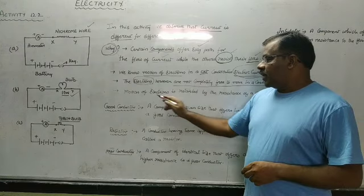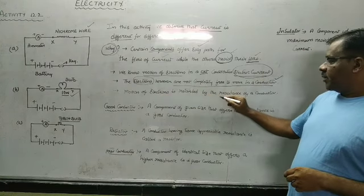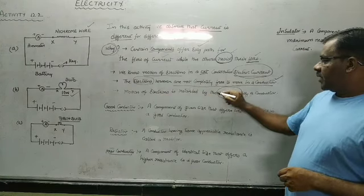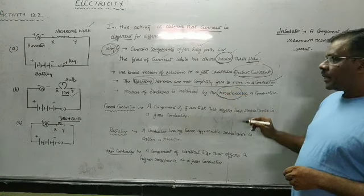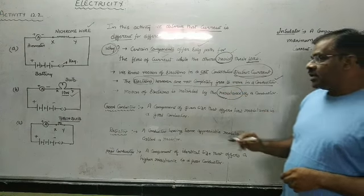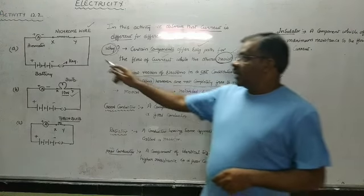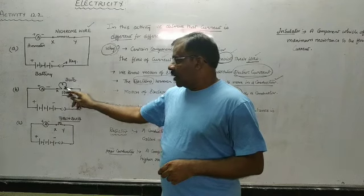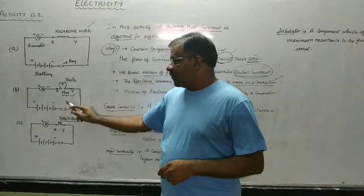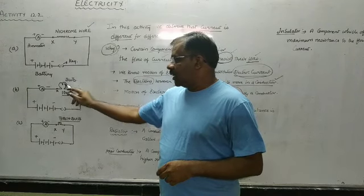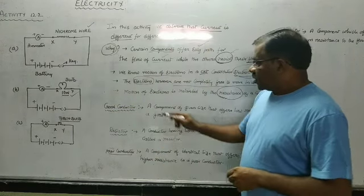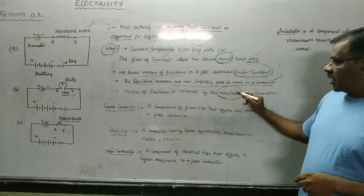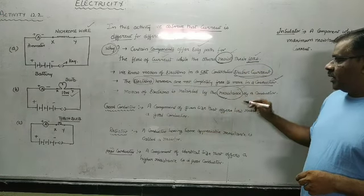The motion of electrons is always retarded by the resistance of the conductor. That means the movement of electrons in a nichrome wire will be different from that in a torch bulb. The motion of electrons is always retarded by resistance.